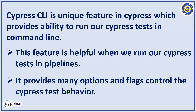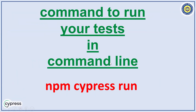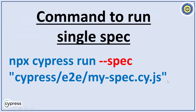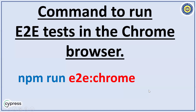The command to run your test in the command line is `npx cypress run`. Here we can use options — for example, if you want to run a single spec file, the command is `npx cypress run` and you can define the `--spec` attribute and give the path of a particular spec file.